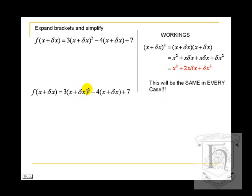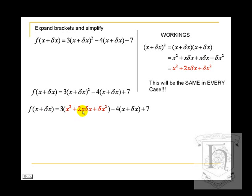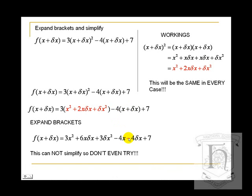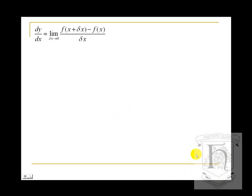Substituting (x + delta x) squared back into the expression gives: 3(x squared plus 2x·delta x plus delta x squared) minus 4(x + delta x) plus 7. Expanding — multiplying the 3 through gives 3x squared plus 6x·delta x plus 3·delta x squared. Be careful with the signs: minus 4x and minus 4·delta x. This cannot be simplified further at this stage, but substituting into the first principles definition will cause many terms to cancel.